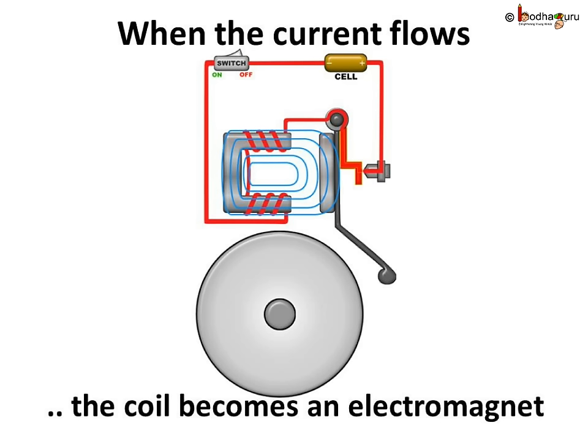Now, let us switch on the circuit and the fun begins. Right now, the clapper is in the contact with the screw. So, the circuit is complete and the current flows through the coil.